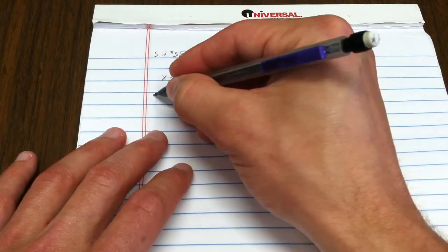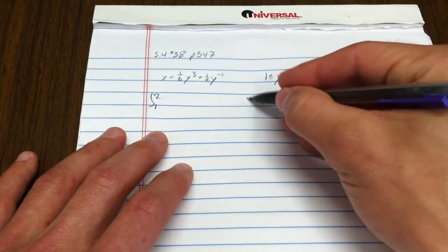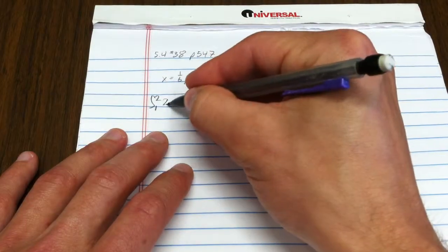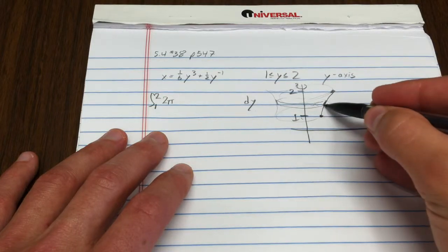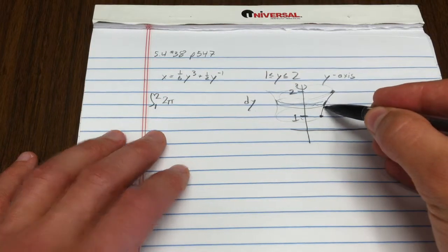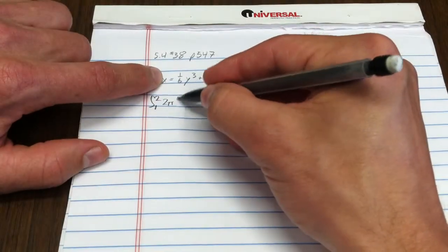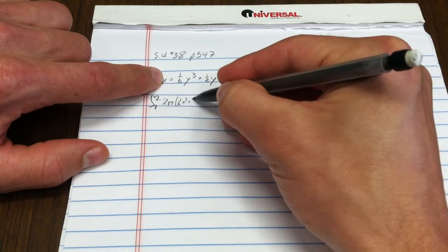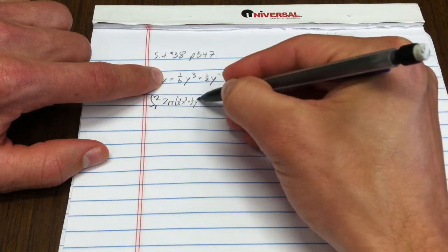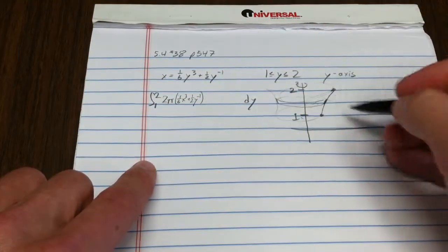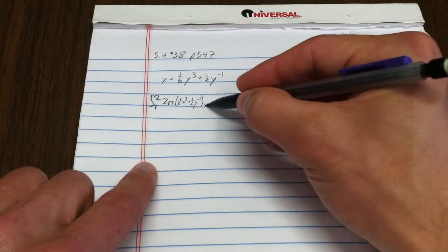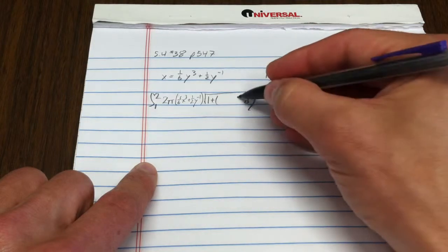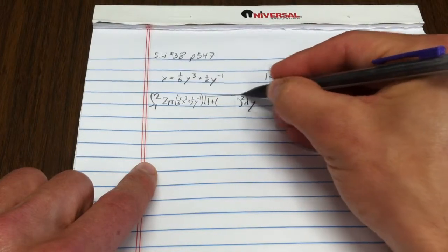Remember that the formula for that is: we're going to be cutting from one to two along the y-axis. Since we've got the circumference, that's two pi times the radius. Notice the radius is just how far this is out in the x direction—that's just the function one-sixth y to the third plus one-half y to the negative one, times that approximation of the arc length, that is the square root of one plus the derivative of this, all squared.